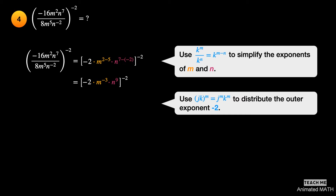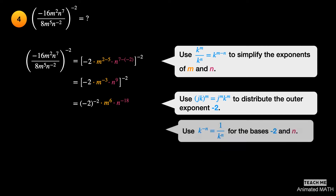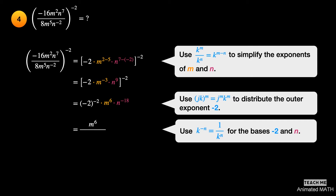Using the seventh property, distribute the exponent negative 2. The exponent of base negative 2 is negative 2. The new exponent of m is negative 3 times negative 2, or 6. The new exponent of n is 9 times negative 2, or negative 18. Use the fourth property for base negative 2 and base n. The square of negative 2 is 4. The final answer is m to the sixth power divided by 4n to the 18th power.